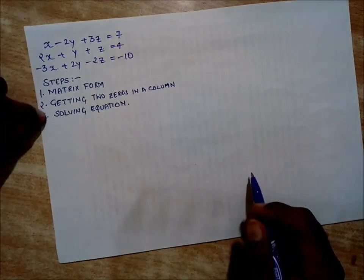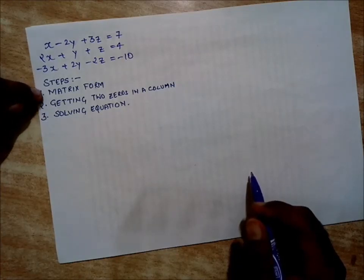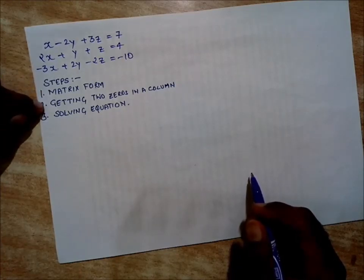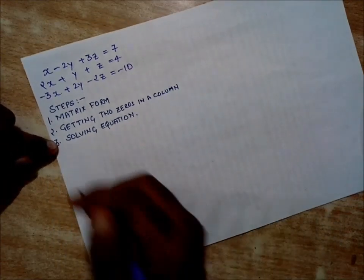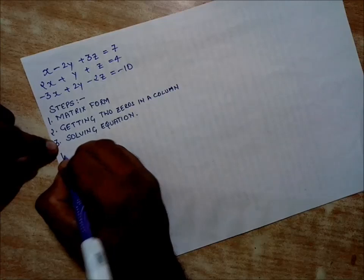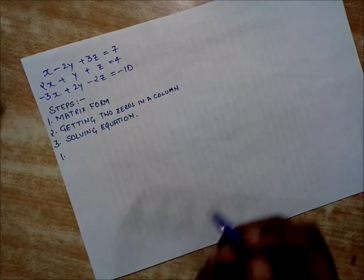As you can see, I have written the steps one, two, three. Step one is matrix form, step two is getting two zeros in a column, and step three is solving equations. So let's get started.